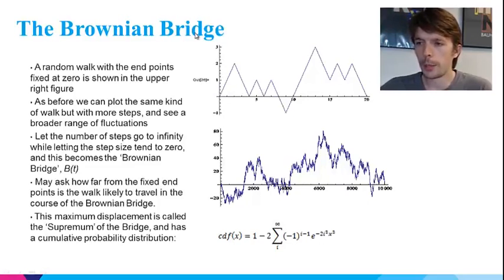If you take a similar limit that the size of the steps goes to zero as their length goes to infinity, then the walk becomes what is called a Brownian bridge. One question we might like to ask about a Brownian bridge is, in the course of the process, what is the maximum distance I am likely to stray from zero? Mathematicians have answered this question by calculating the probability distribution. This is shown here in the equation at the bottom of the slide.